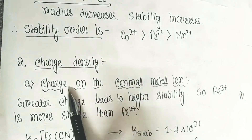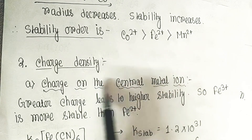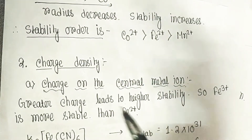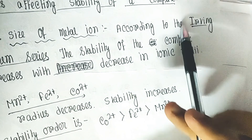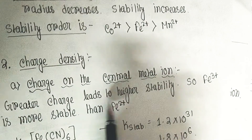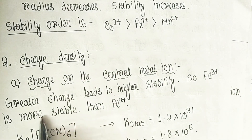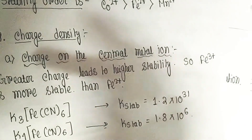Coming to the charge density part — the second factor affecting stability with respect to the metal — we need a high amount of charge on the central metal ion. The metal needs a small size and a higher charge. Greater charge leads to higher stability. For example, Fe³⁺ is more stable than Fe²⁺ in its complexes.